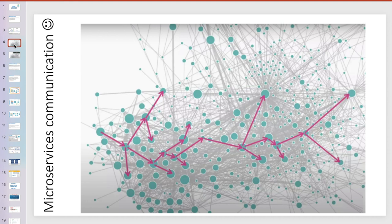If you put logs in the microservices, you cannot find out how the communication is happening and where the application is going to break. Some common place should be there where all the microservices information should be gathered, and on top of that you can stitch all those requests and make more meaningful information. For example, one request may involve multiple microservices communications, so it is difficult to find the latency of each individual microservice.